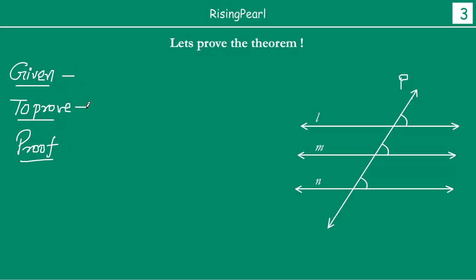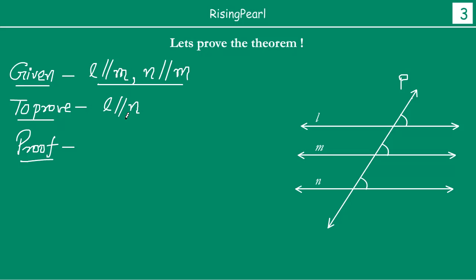So, what is given? Line L is parallel to line M, and also it is given that line N is parallel to line M. These are the two things which are given. Now, we have to prove that line L will be parallel to line N — this is what we want to prove. So, we draw a transversal P, as shown in the figure, such that the transversal cuts all three lines L, M and N.